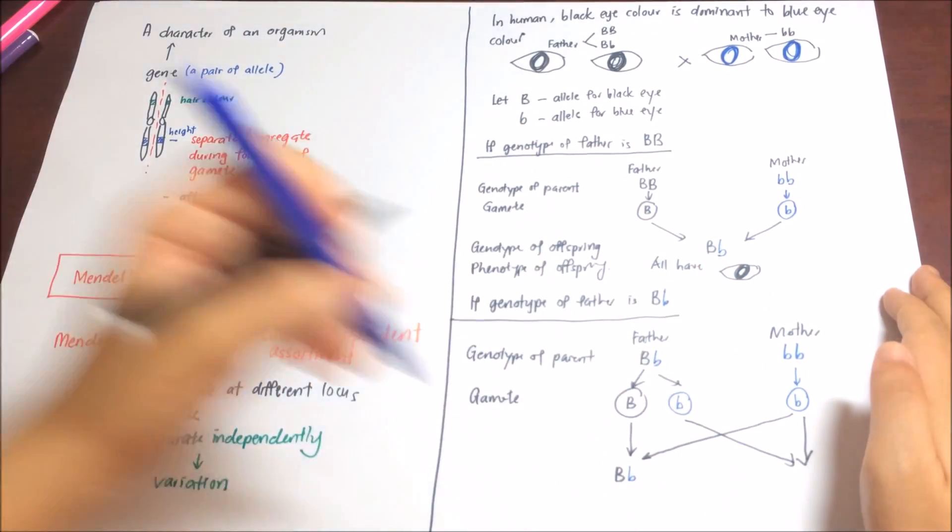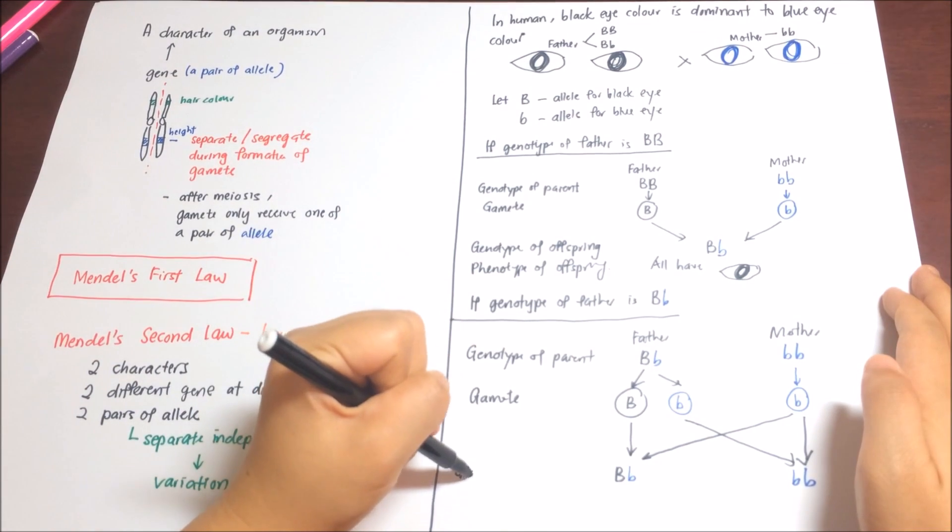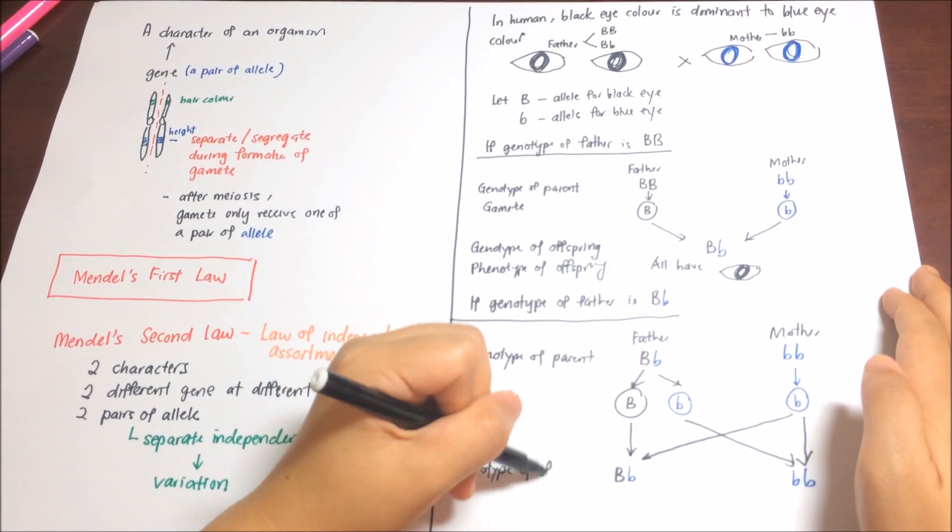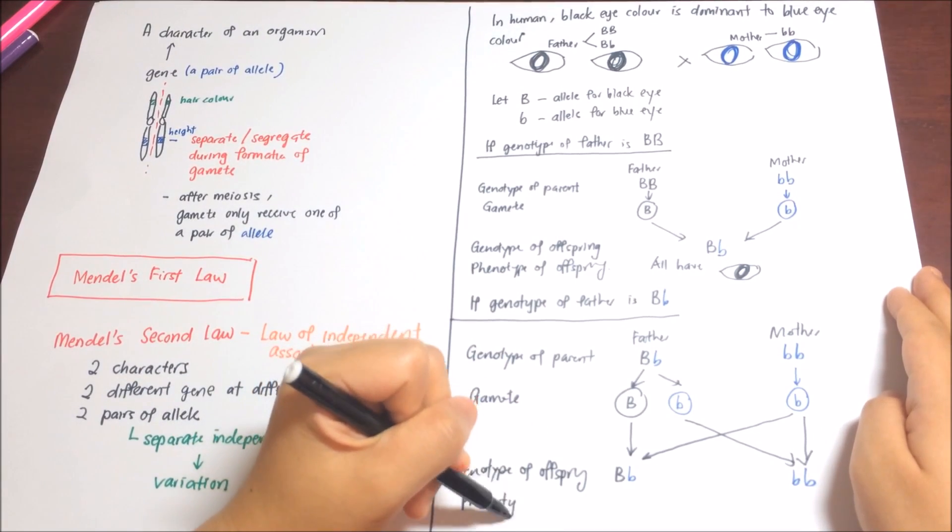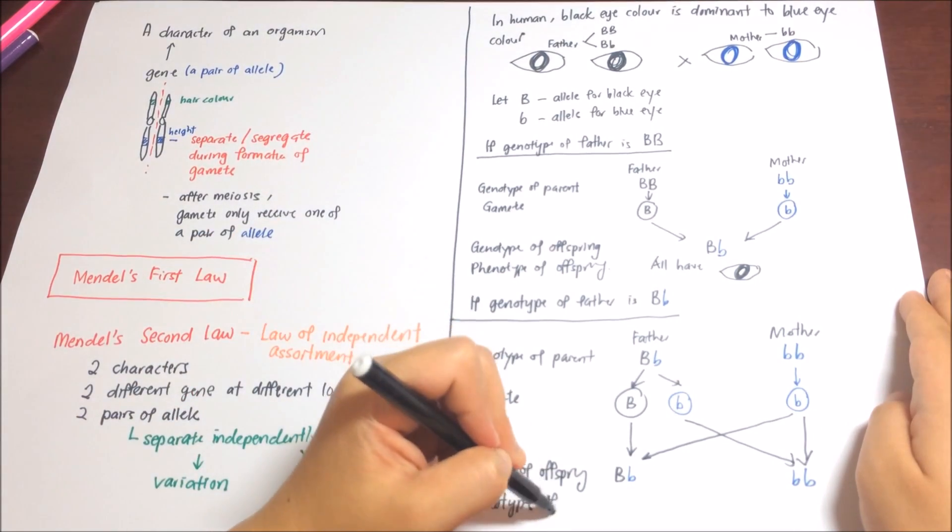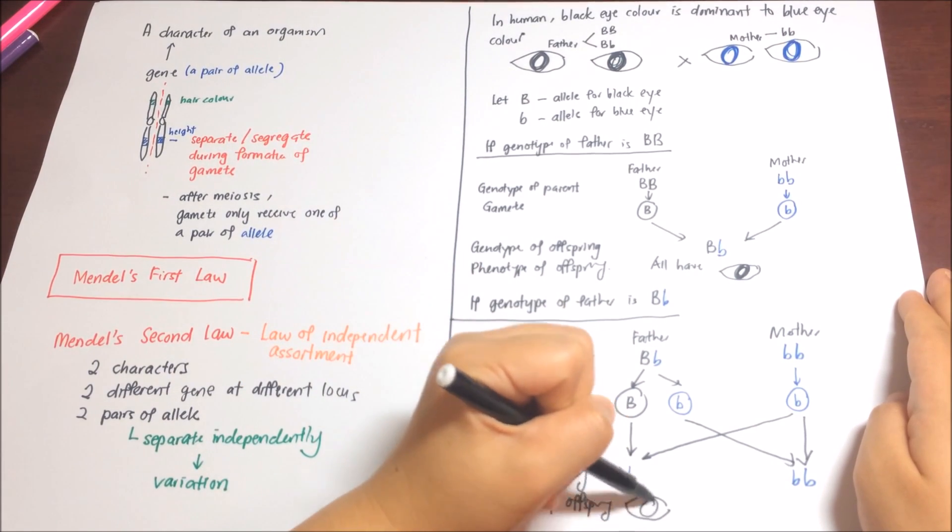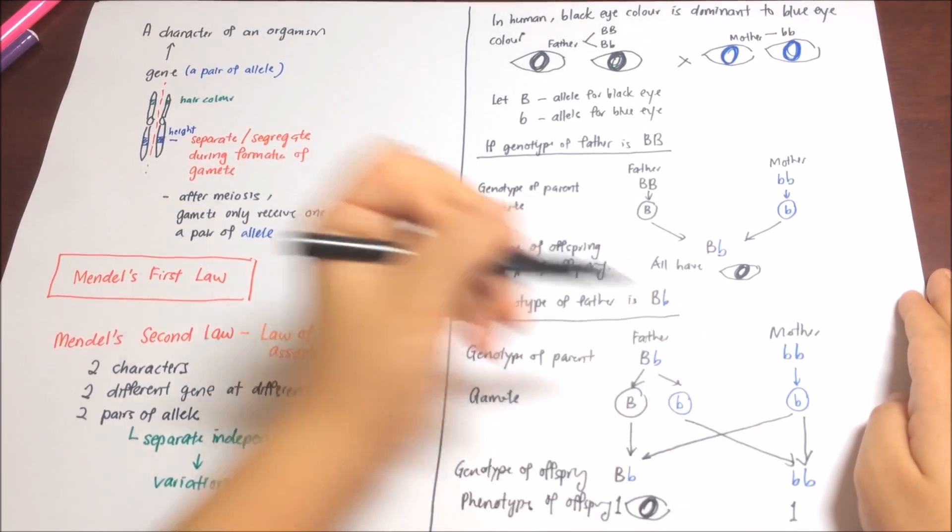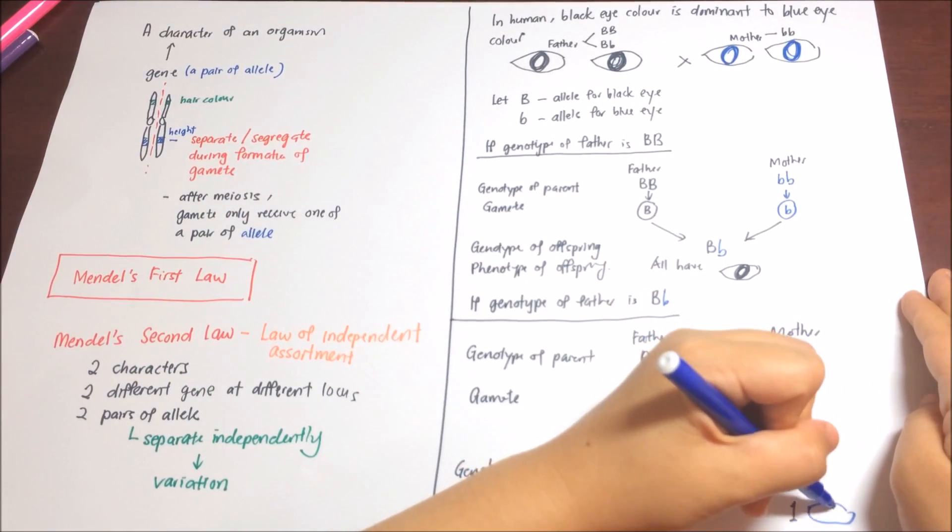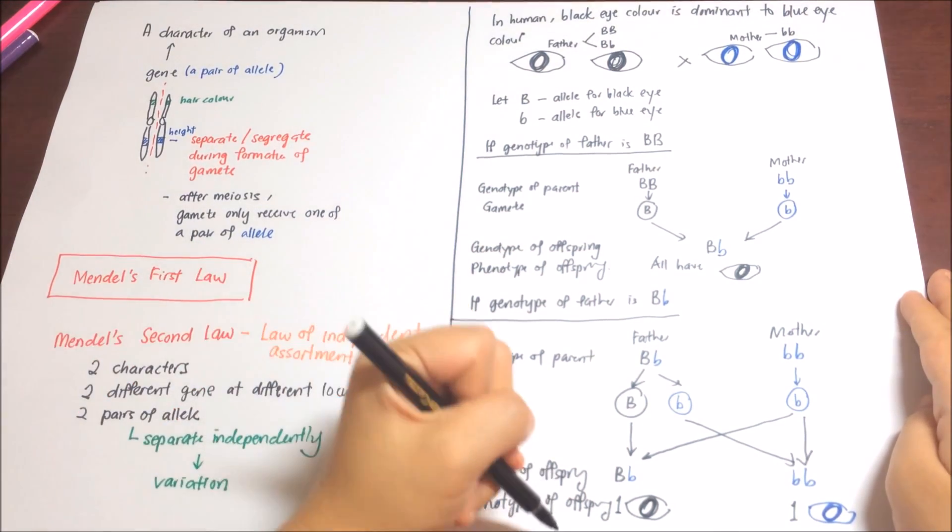After fertilization, you will get one heterozygous dominant and one homozygous recessive. Which means 50% of the offspring will have black eyes and another 50% will have blue eyes.